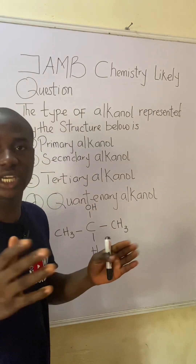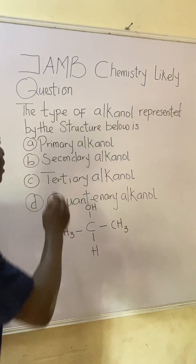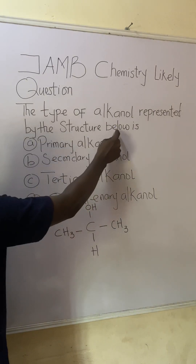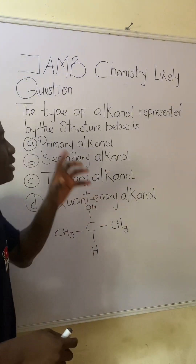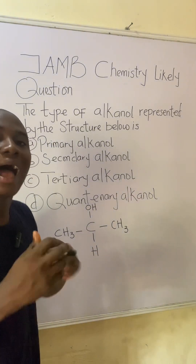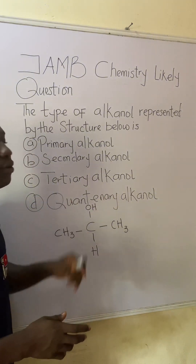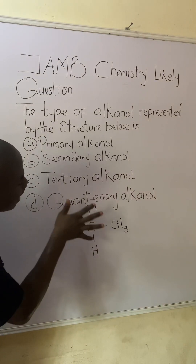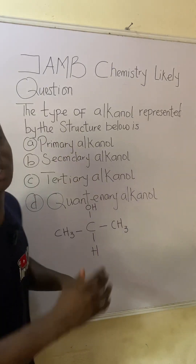If you came across this question in the JAMB exam, how will you solve it? It's actually very easy. The question says: the type of alcanol represented by the structure below is what? An alcanol can be of four types: primary, secondary, tertiary, or quaternary. Now to solve this question is very easy.